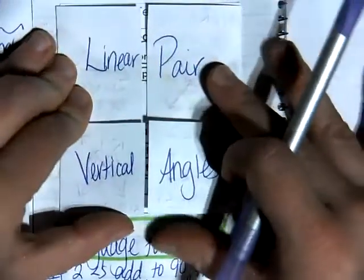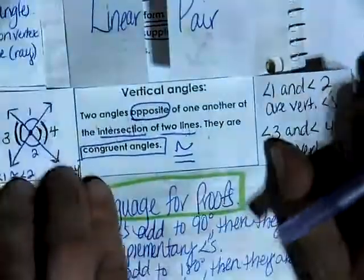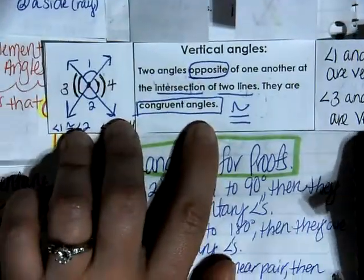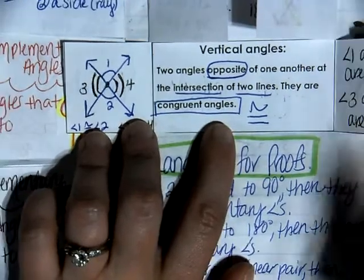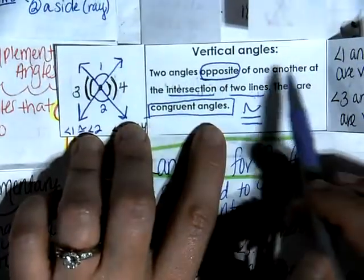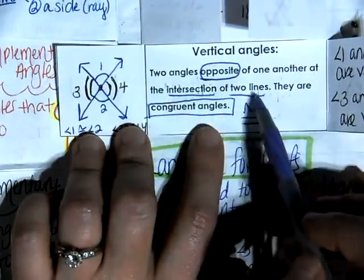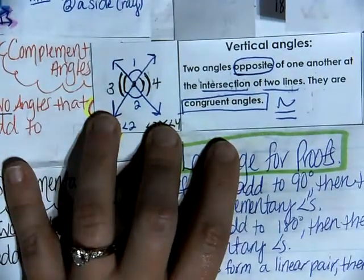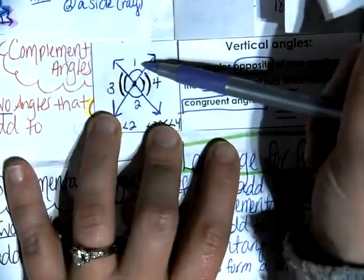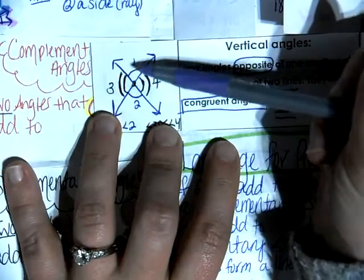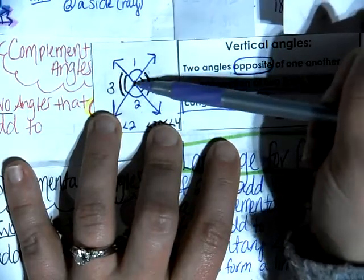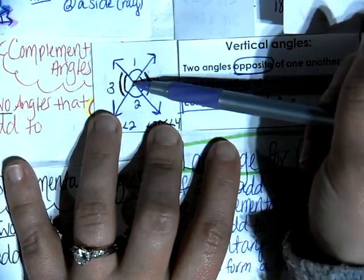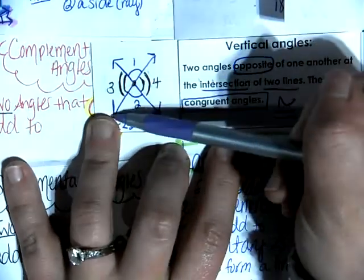The second vocabulary word is vertical angles. These are sometimes called the bow tie angles. They are angles that are opposite of one another at the intersection of two lines. That means that these are angles that only share a vertex — they do not share a side. So like angle one and angle two, they only share a vertex, they do not share a side, and they are formed by two lines that are intersecting each other.